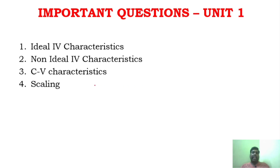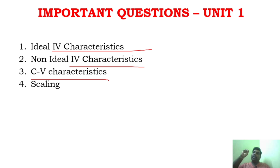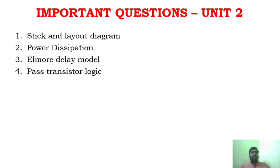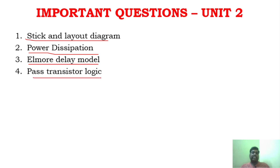For unit 1, the most important questions are ideal IV characteristics, non-ideal IV characteristics, and CV characteristics. All characteristics-related questions appear frequently in question papers. Scaling is also covered in unit 1 — learn it. In unit 2, the L-bar model (Elmore's delay model) is a very important question, as well as stick diagram, power dissipation, and pass transistor logic.